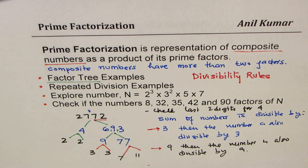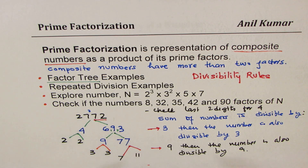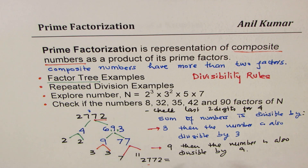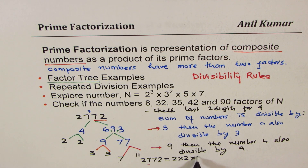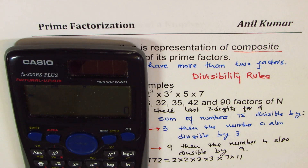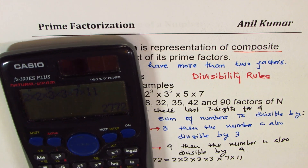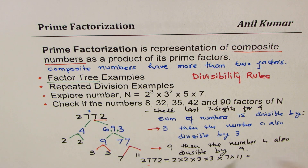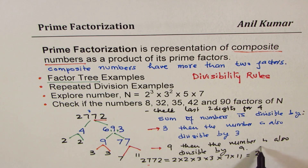This process is called the factor tree. Now let's also note that 2772 can be written as a product of all these numbers: 2 times 2 times 3 times 3 times 7 times 11. You can confirm using a calculator — 2 times 2 times 3 times 3 times 7 times 11 gives 2772. That is how you write a number as a product of prime numbers — this is called prime factorization. We can write it in shorter form: how many 2's? Two — so write 2 squared.